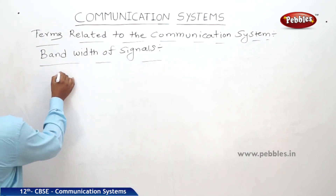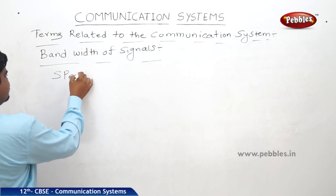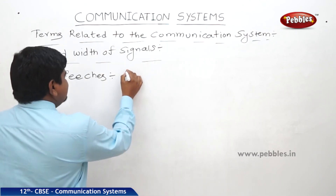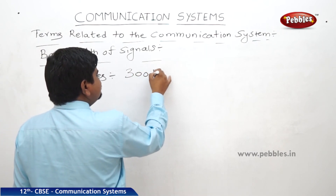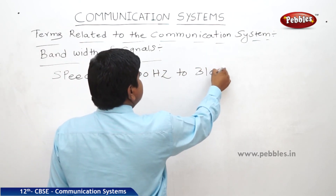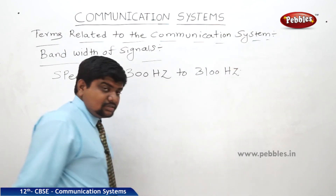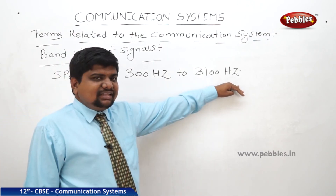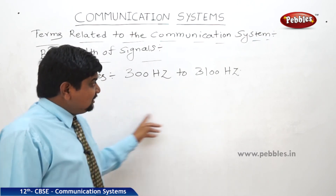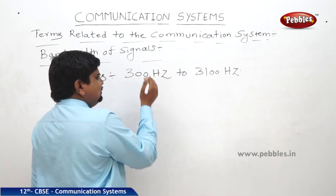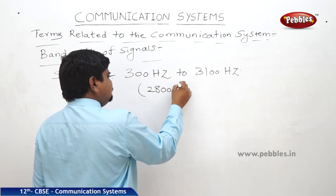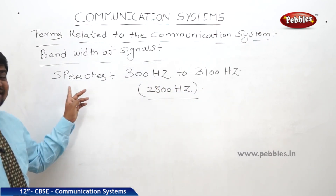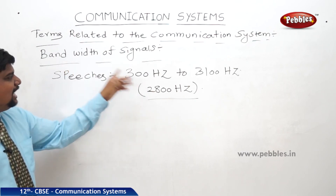Let us suppose for speech signals: the frequency range is approximately 300 Hz to 3100 Hz. So the minimum is 300 Hz and the maximum is 3100 Hz. The range of frequencies is high minus low, which equals 2800 Hz. This much frequency range is needed for the speech signals. So this is said to be the bandwidth of the speech signals.